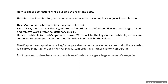TreeMap also relies on key-value pairs, but it cannot contain null values or duplicate entries. It is sorted in natural order by key, or in a custom order by a custom Comparator. TreeMap is generally used when you want to visualize part-to-whole relationships among a large number of categories.